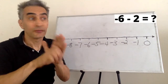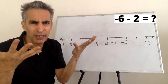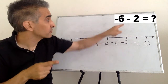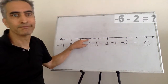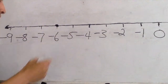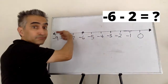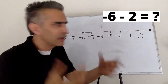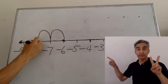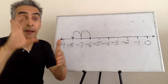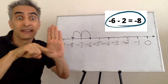Another example: What does negative 6 minus 2 equal? We're going to start with negative 6 — there it is. This subtraction sign means move to the left 2 spaces: 1, 2. Negative 6 minus 2 equals negative 8.